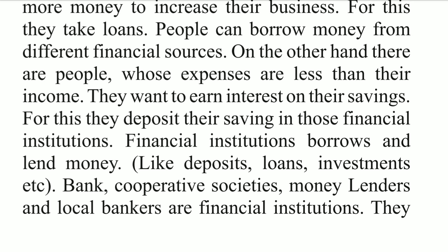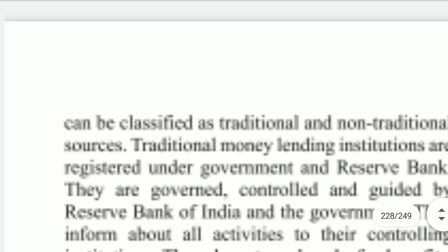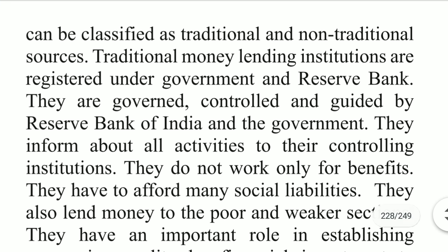Now we talk about financial institutions. Financial institutions borrow and lend money — they accept deposits, provide loans, and manage investment amounts. Examples of financial institutions include banks, societies, moneylenders, and local bankers. They accept our savings as deposits and provide credit in the form of loans to borrowers. These can be classified as traditional and non-traditional sources.